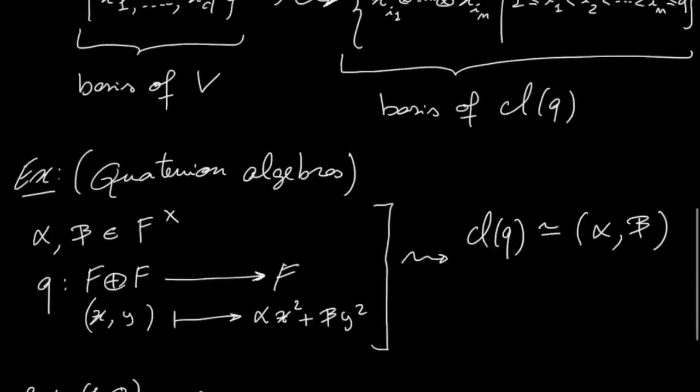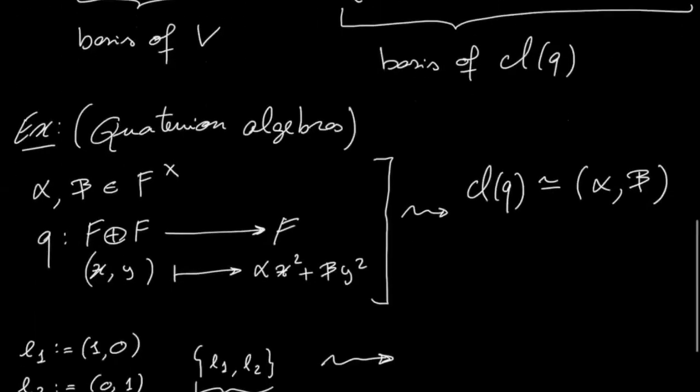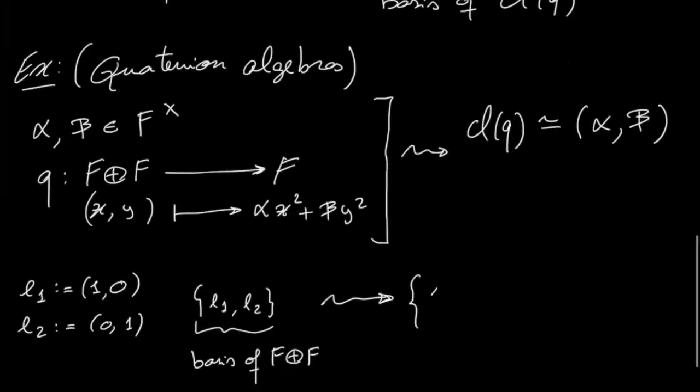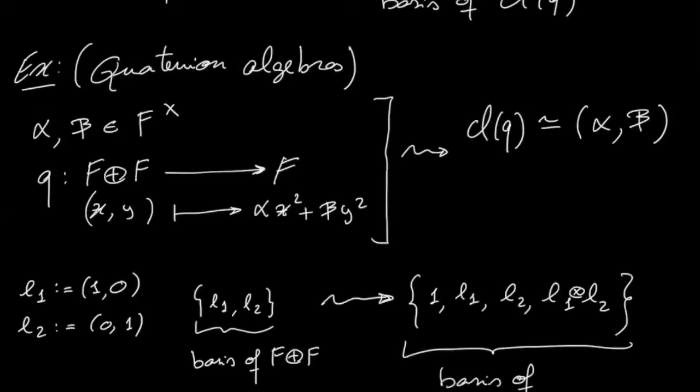if we use the above remark about the basis of the Clifford algebra, we get that 1, e1, e2, and then e1 e2, so this element e1 e2 seen in the Clifford algebra, it's actually a basis of the Clifford algebra.